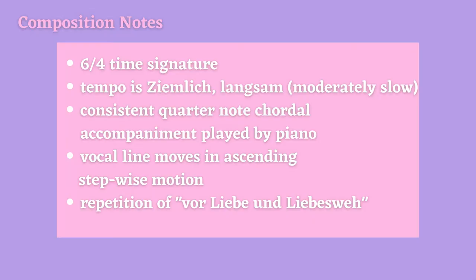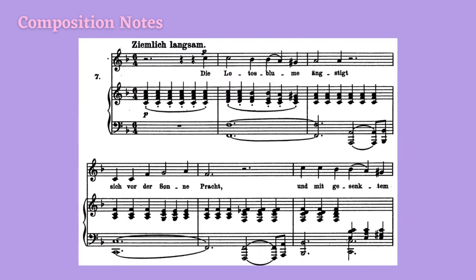Now let's talk about the compositional structure of Die Lotusblume. The time signature is in 6/4, which is unique — maybe as unique as the lotus flower that blooms during the night. The tempo is marked ziemlich langsam, meaning moderately slow, perhaps representing the pace at which the flower reveals itself to the moon. The piano plays a consistent quarter-note chordal accompaniment that doesn't cease until the last handful of beats at the end of the song. One could imagine these chords representing the constant passage of time, or the sacred nature of the lotus flower in bloom in response to its lover, the moon.